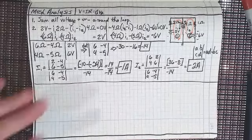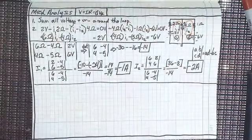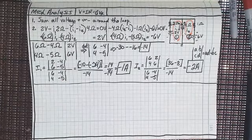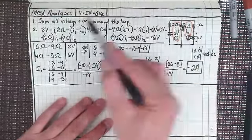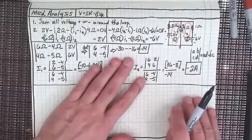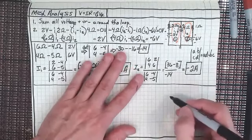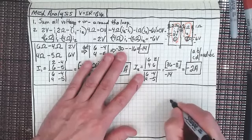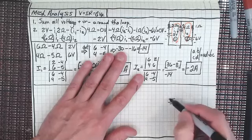All right class, I am back. I just wanted to set up our three-by-three matrix example. Two-by-two matrices and the introduction of mesh analysis are very easy. It becomes more difficult when we go from a two-by-two to a three-by-three matrix. I want to teach you a trick I use for three-by-three matrices. Let me draw this three-loop circuit so we can get started.